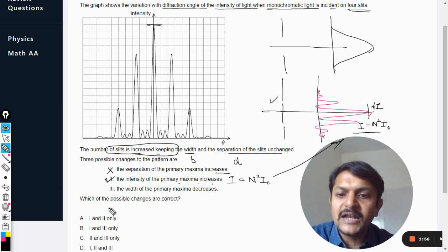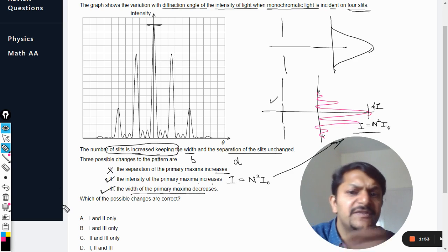So more is the number of slits, more is the intensity. No doubt about that. The width of the primary maxima decreases, even that is correct.